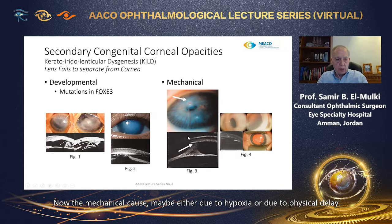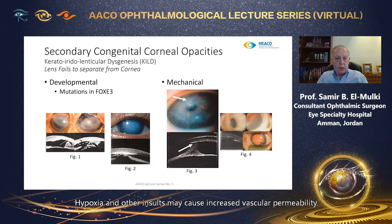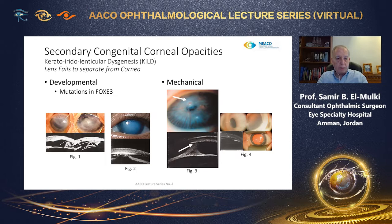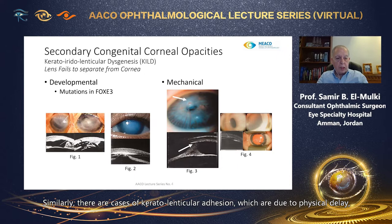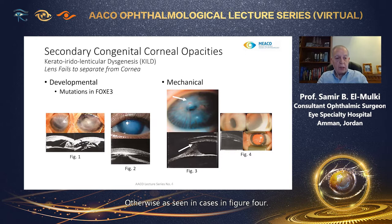The mechanical cause may be either due to hypoxia or physical delay. Hypoxia and other insults may cause increased vascular permeability, transfusion, and adhesion of Descemet's membrane to the cornea, resulting in damage to Descemet's membrane and corneal endothelium. The case in figure 3 may be explained in this manner. Similarly, there are cases of keratoiridolenticular adhesion due to physical delay in separation with an essentially normal lens and normal cornea, as seen in the cases in figure 4.